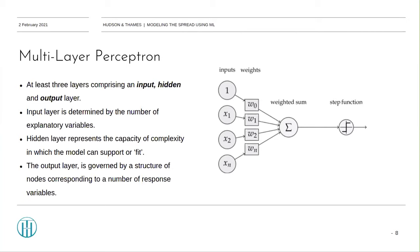The hidden layer represents the capacity of complexity in which the model can support fit. Moreover, both the input and hidden layers contain what is known as a bias node. The value attributed to this node is a fixed value and equal to one. Its purpose is similar to the intercept in more traditional regression models. The final layer is the output layer. It's governed by a structure of nodes corresponding to a number of response variables.